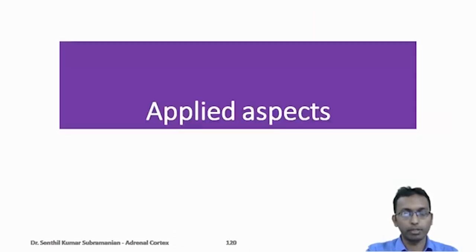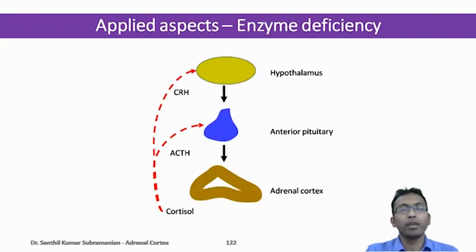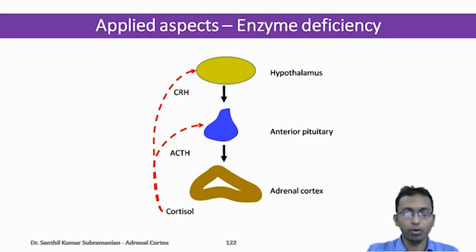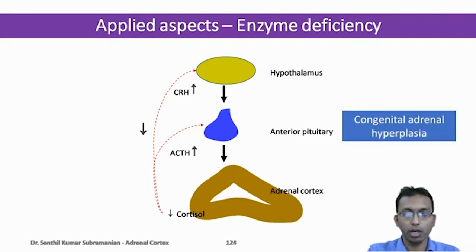Applied aspects: enzyme deficiency. Let us review the regulation of cortisol secretion: hypothalamus secretes CRH, which acts on the anterior pituitary to release ACTH, which acts on the adrenal cortex to release cortisol. Cortisol has feedback inhibition on both the anterior pituitary and hypothalamus. If cortisol is decreased, feedback to the pituitary and hypothalamus is reduced, CRH and ACTH secretion increase, and since ACTH is a trophic hormone, the adrenal gland increases in size — this is called congenital adrenal hyperplasia (CAH). When an enzyme is deficient, clinical features relate to deficiency of products below the enzyme and excessive production of substrates above it. Excess ACTH leads to increased production of sex hormones and genital abnormalities — hence these are called adrenogenital syndromes.